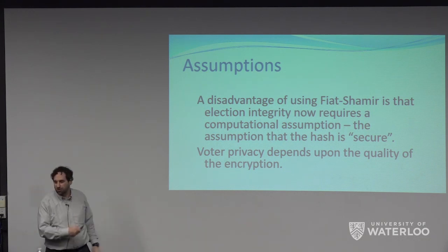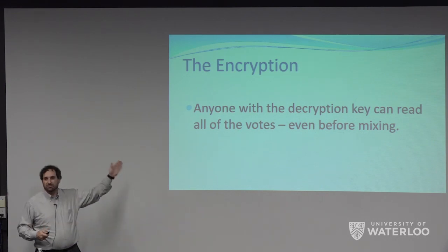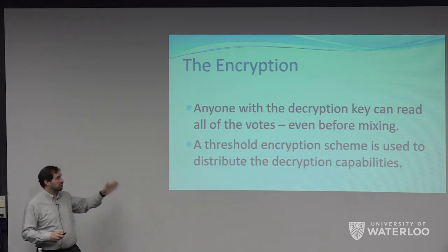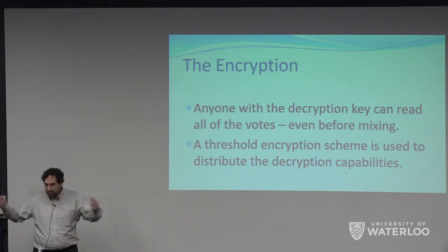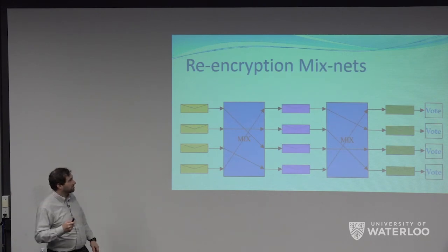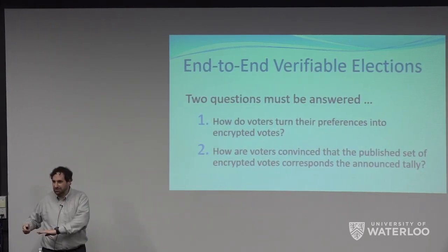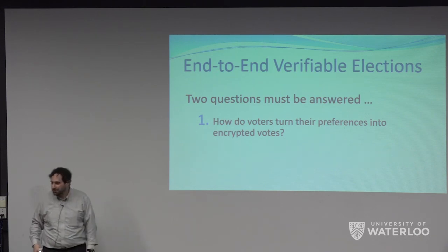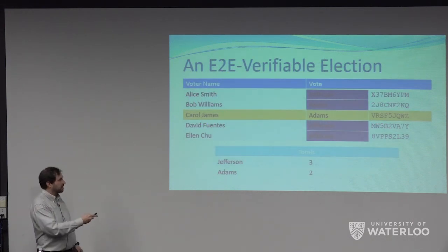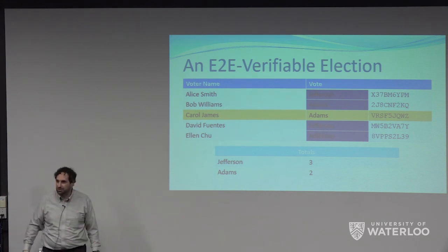Anyone with a decryption key can decrypt votes before or after mixing, so you better use threshold encryption so it's not just one person who has the key. So that's part two. I want to come back to part one: how do you get Carol to know that the encrypted value on the list is an encryption of her choice? The first thing you might think of is to tell Carol to encrypt her own choice herself. Well, for the first 15 years that's what everyone said — voters just do their own encryption, no problem.